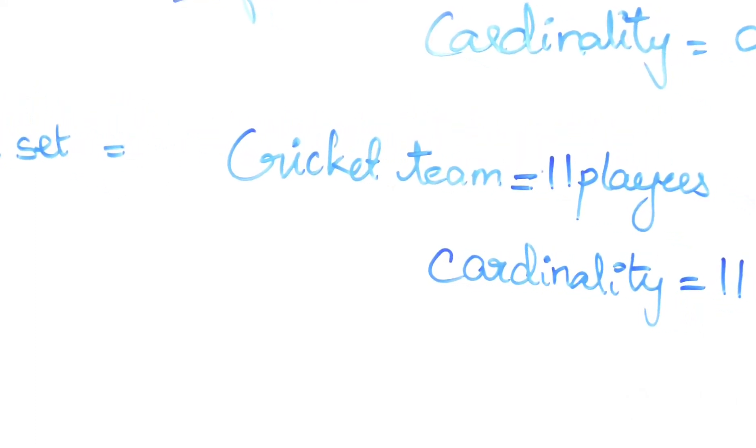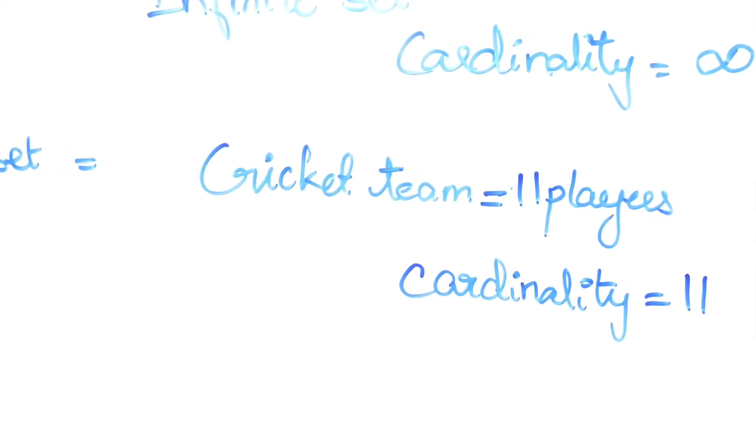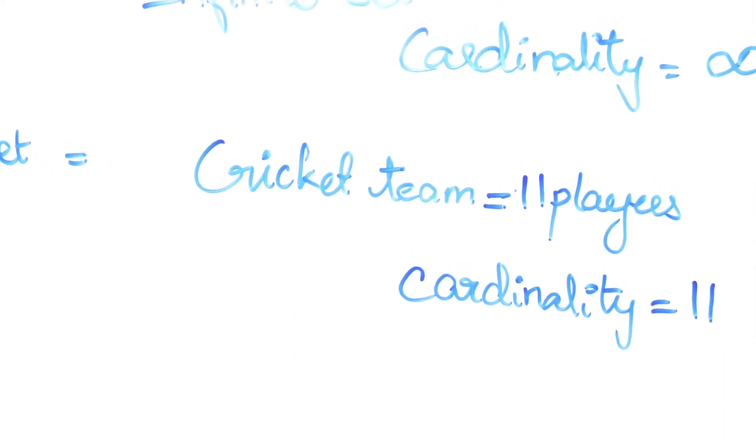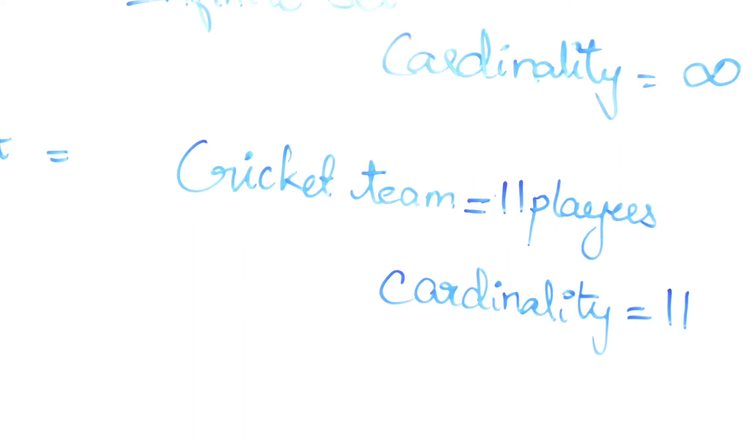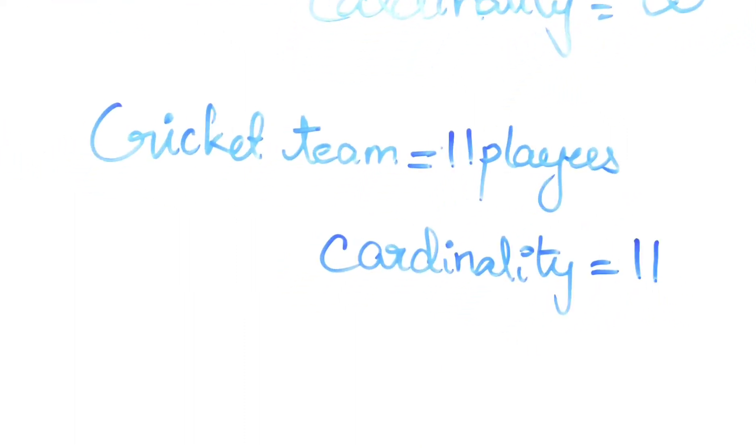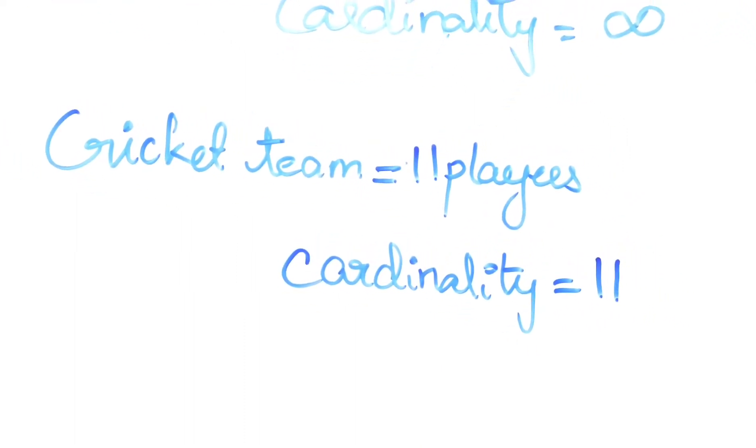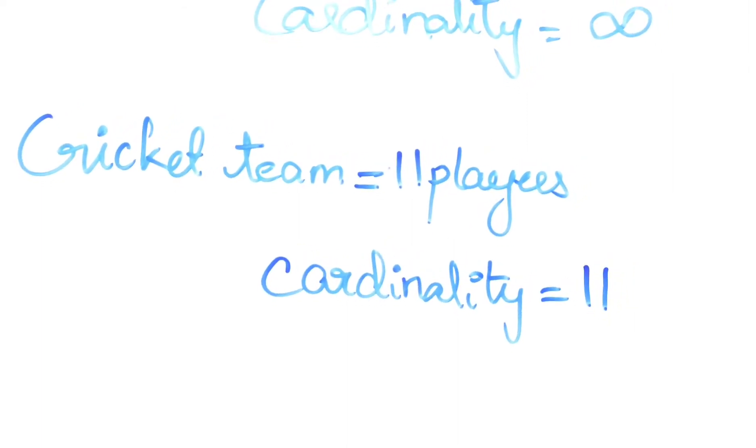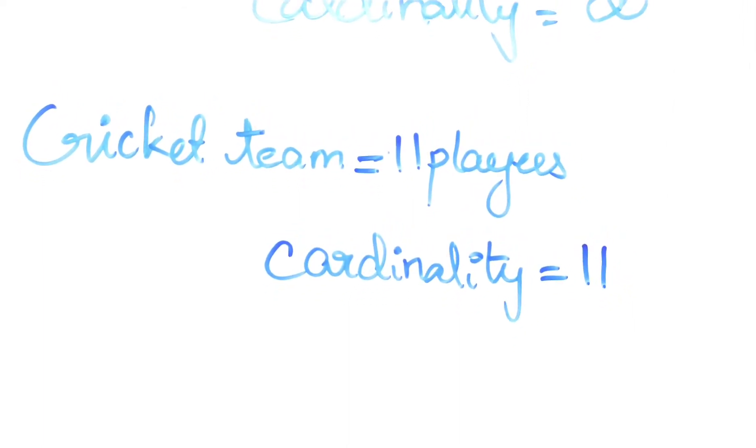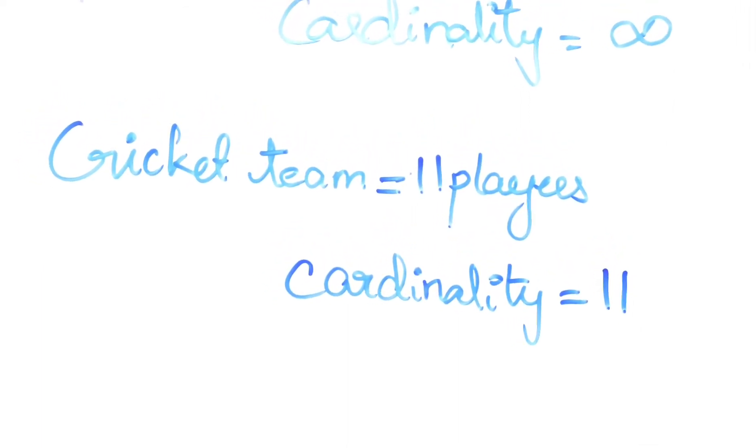Any finite set, list out the elements, count the number of elements, that would be the cardinality. If you take a typical cricket playing team, there will be 11 players in the team. So the cardinality of the set will be 11. That's all that cardinality means.